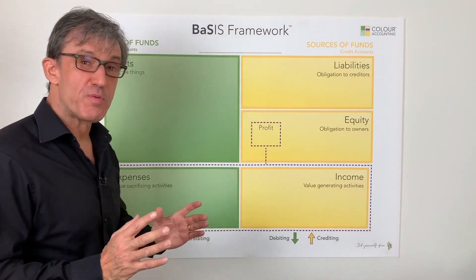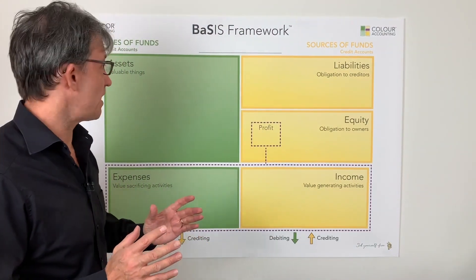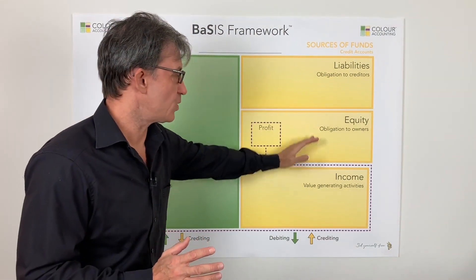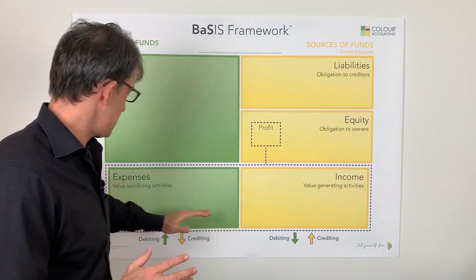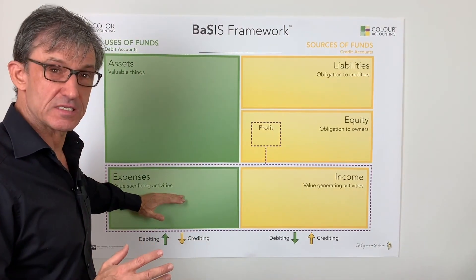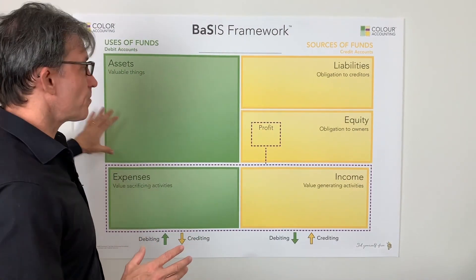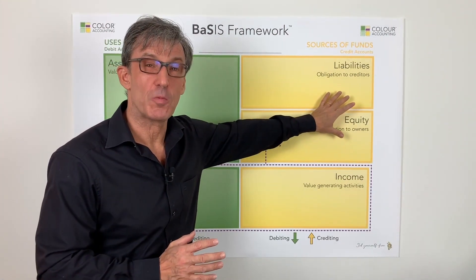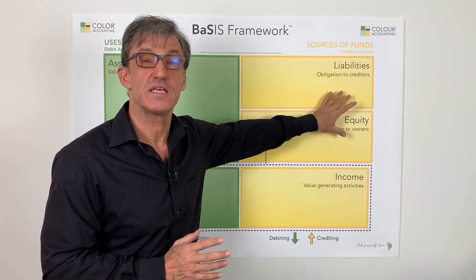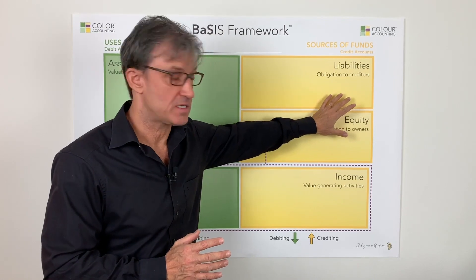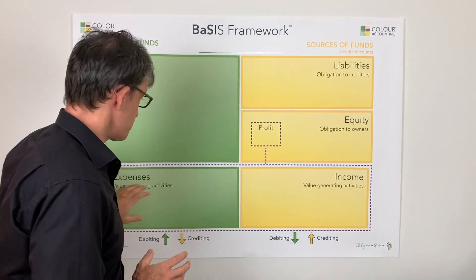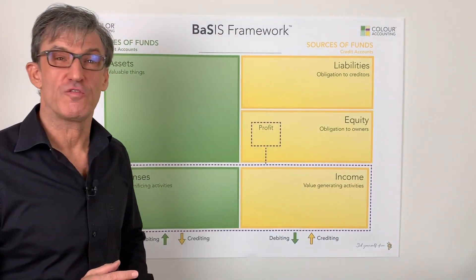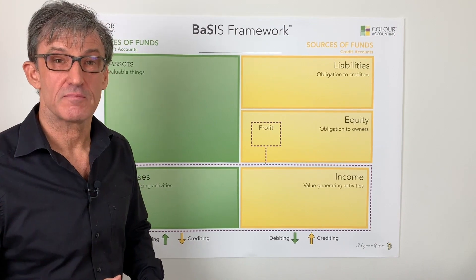There are five parts to this diagram: assets, liabilities, equity, income, and expenses. The top three boxes are what you've probably heard of as the balance sheet. The bottom two boxes are what you've heard of as the income statement.